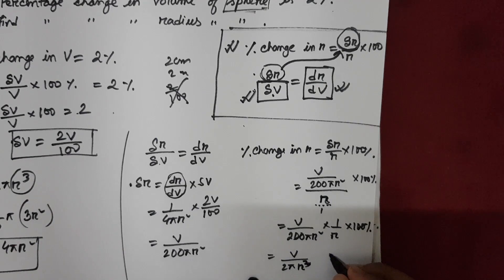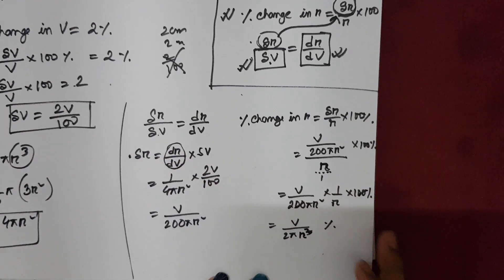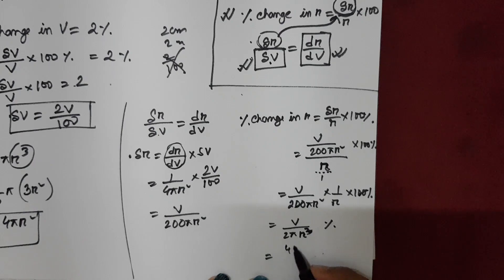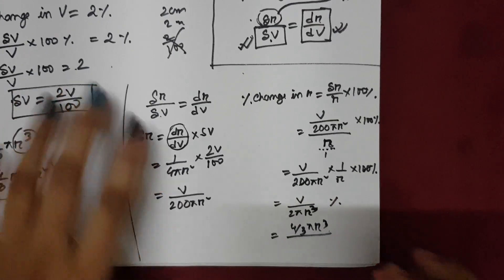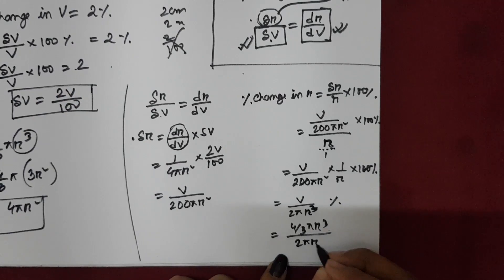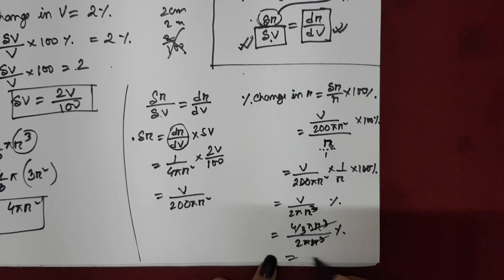Now substituting the volume formula V equals 4 by 3 pi r cubed: we get (4 by 3 pi r cubed) divided by (2 pi r cubed), multiplied by percent. The pi r cubed terms cancel out, leaving 4 by 3 divided by 2, which simplifies to 4 by 6, giving the final answer of 2 by 3 percent.